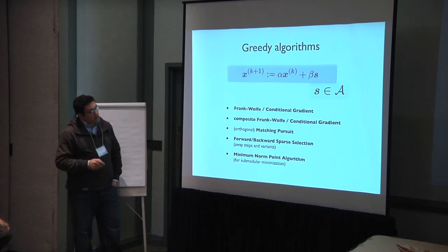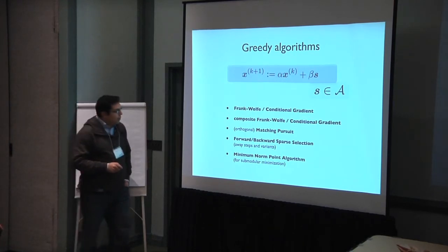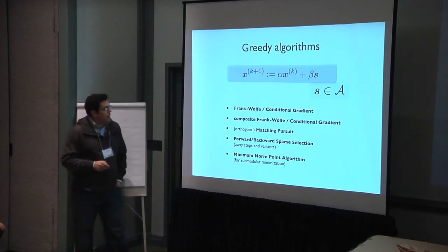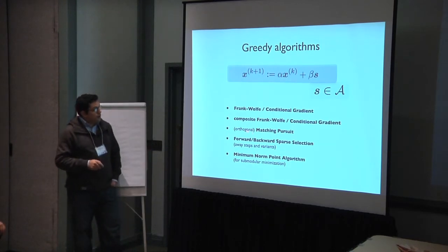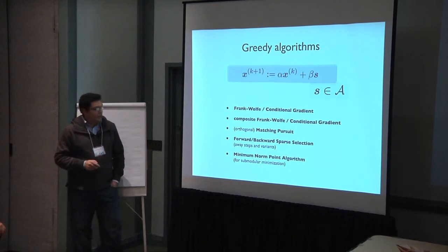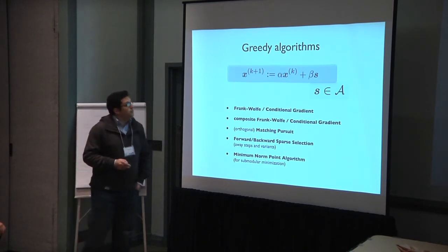This general form can summarize both the Frank-Wolf algorithm and the newly proposed composite Frank-Wolf conditional gradient algorithm, but also matching pursuit, LASSO, forward-backward sparse selection, and also the minimum norm point algorithm.